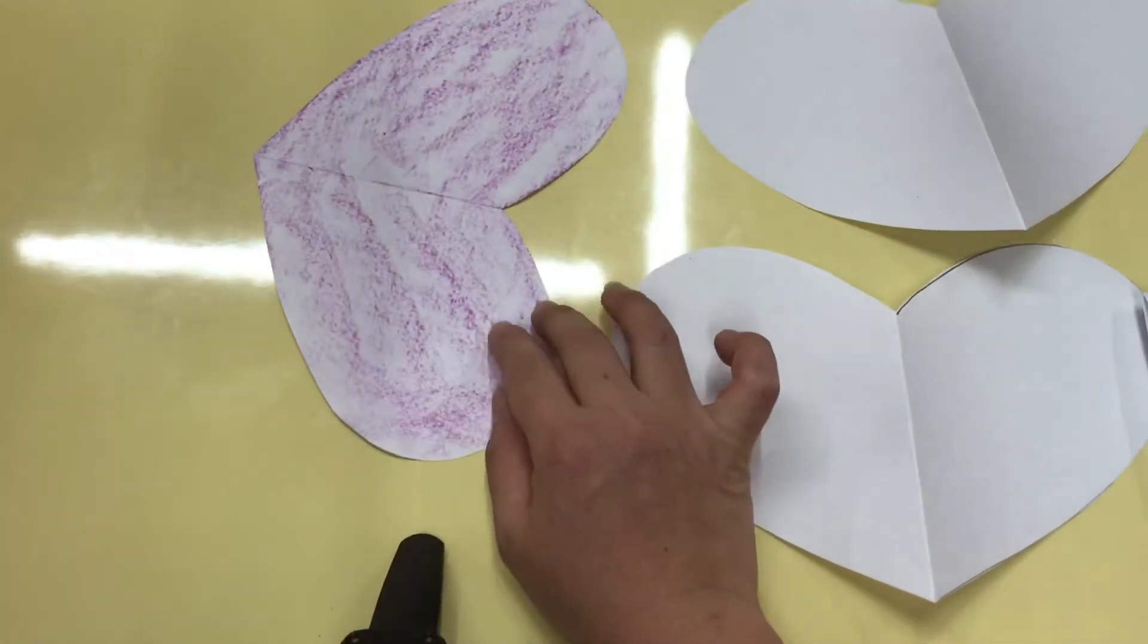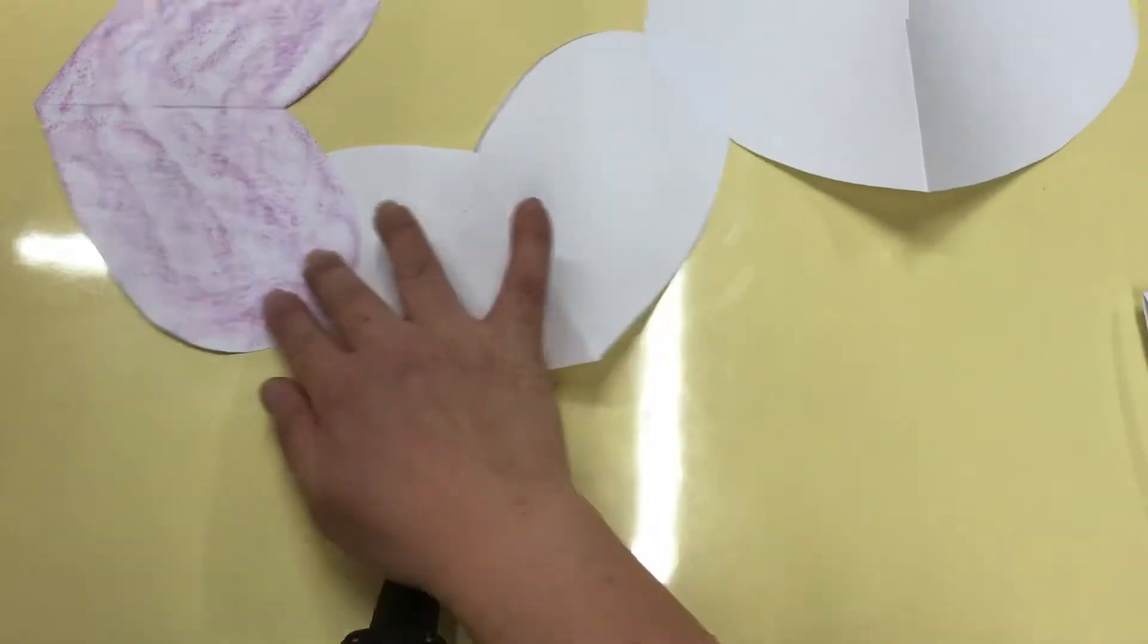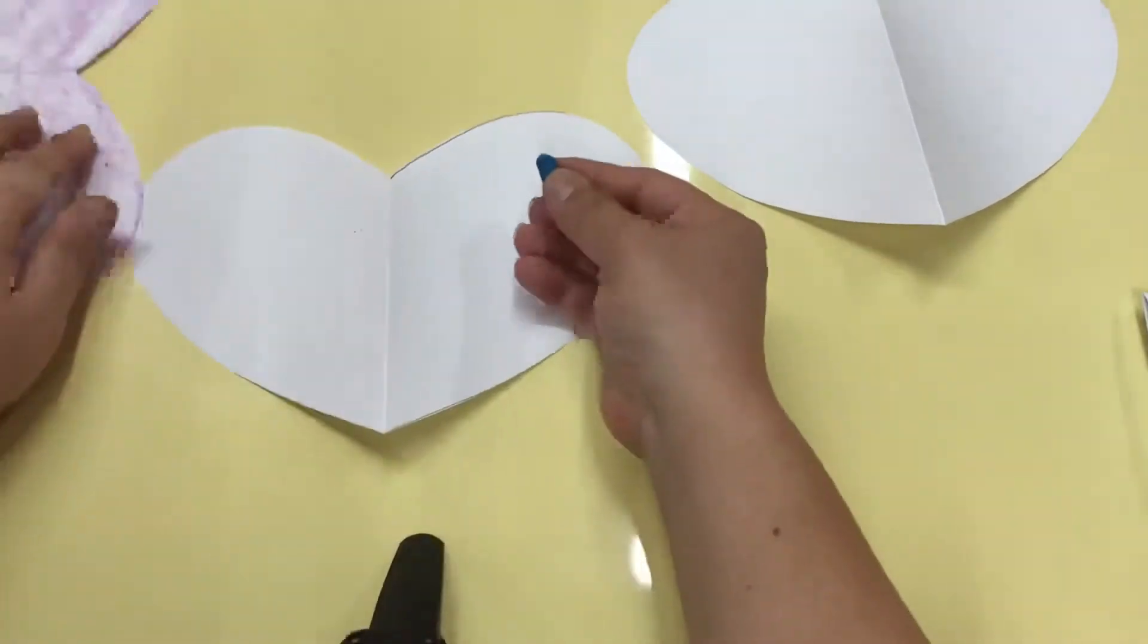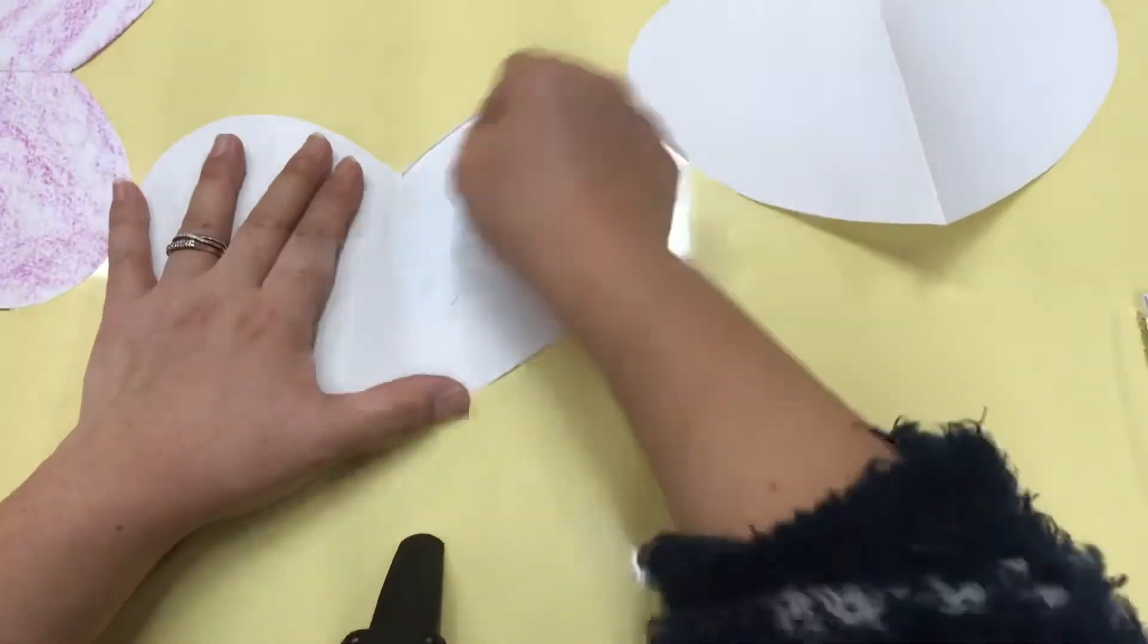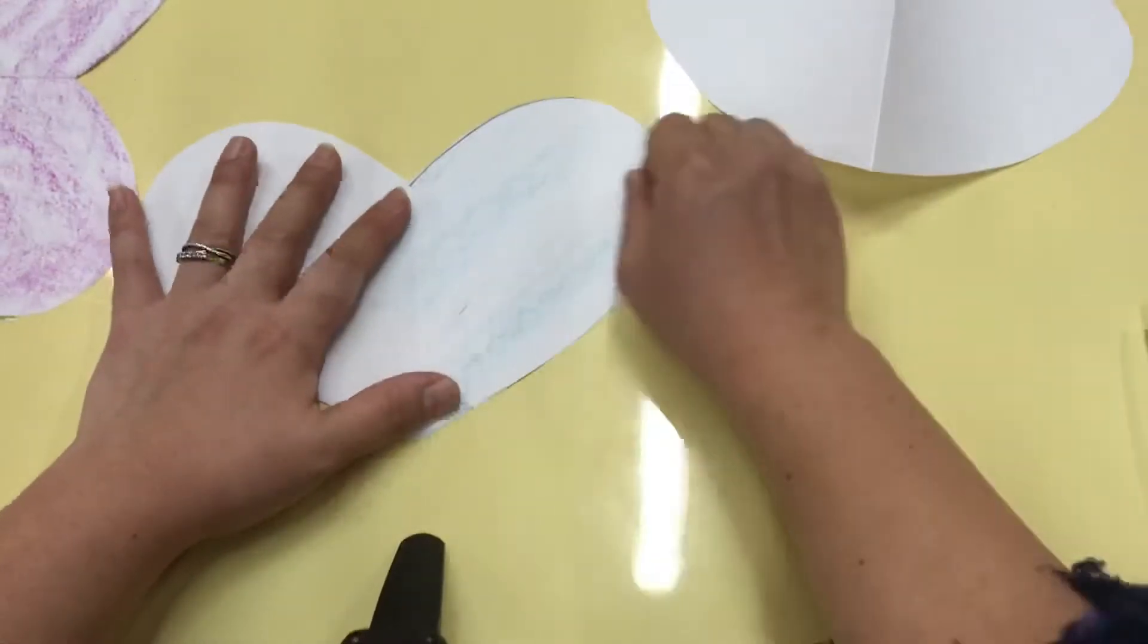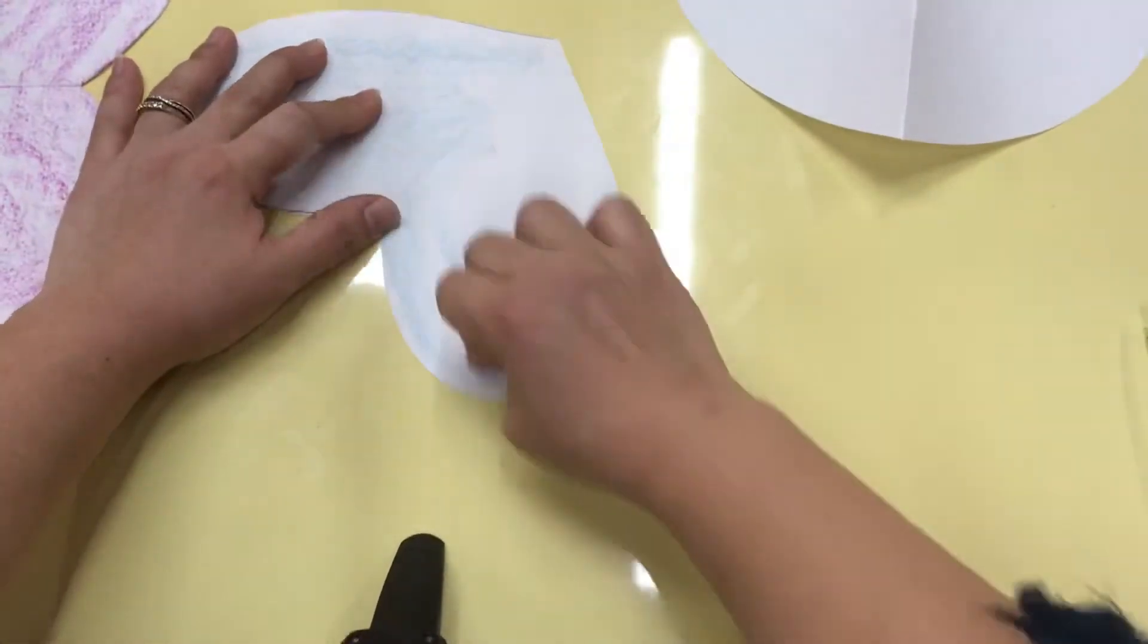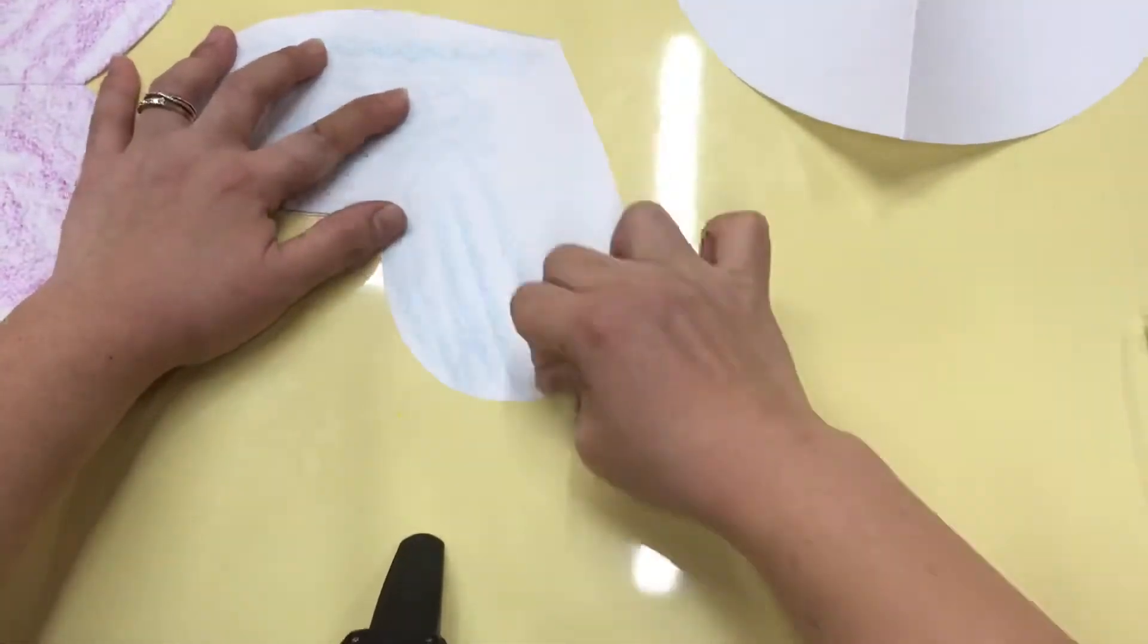Next, you can get another crayon and color the other heart. I'm going to get blue. I think blue is cute. So color, shade it. It's a nice color. Can you see it? It's light blue.